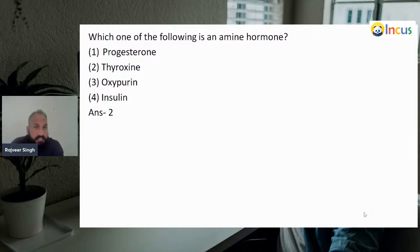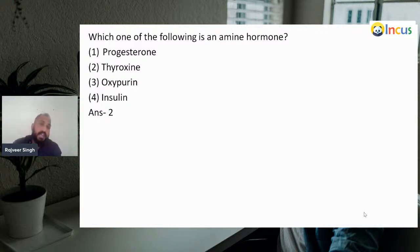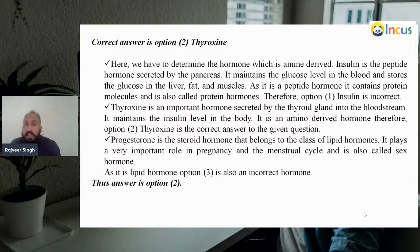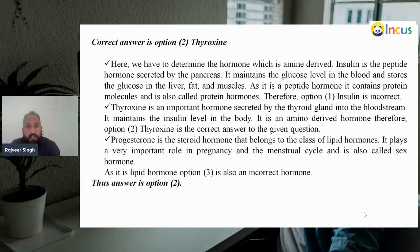Next question: which one of the following is an amine hormone? Progesterone, thyroxine, oxytocin, or insulin? Among these, our answer will be thyroxine, which is an amine hormone. We need to determine which hormone is an amine derivative. Insulin is a peptide hormone secreted by beta cells of the pancreas; it maintains glucose level in the blood and stores glucose in the liver, fat, and muscles. As a peptide hormone, it contains protein molecules. So option one — progesterone — is also incorrect regarding amine hormones. Thyroxine is an important hormone secreted by the thyroid gland; it is an amino acid-derived hormone. Therefore option two is our answer.